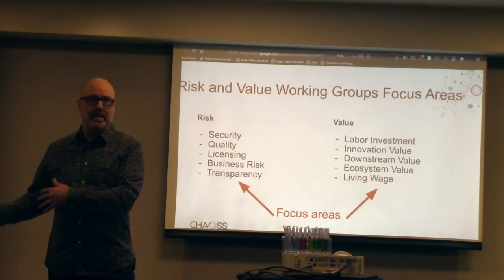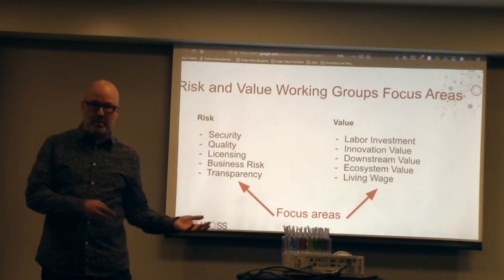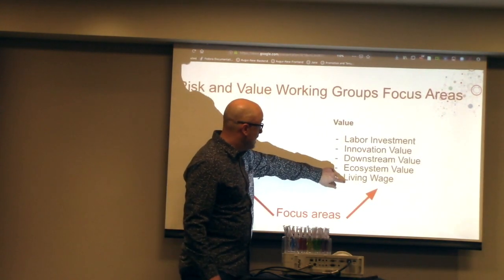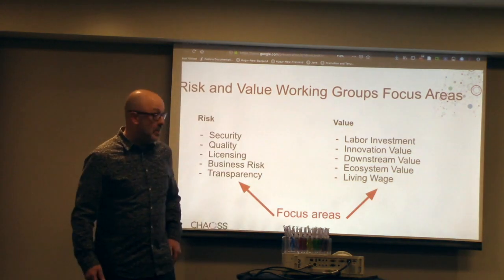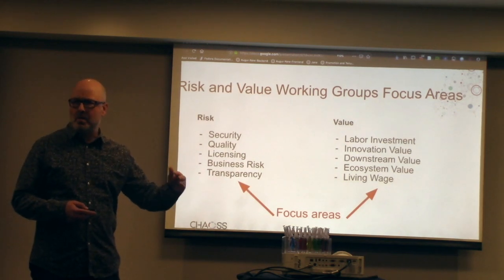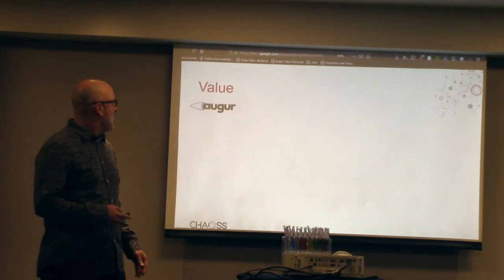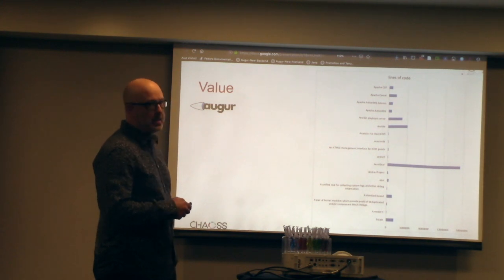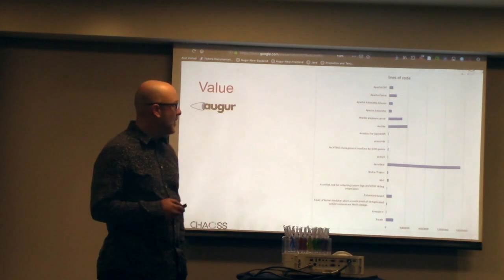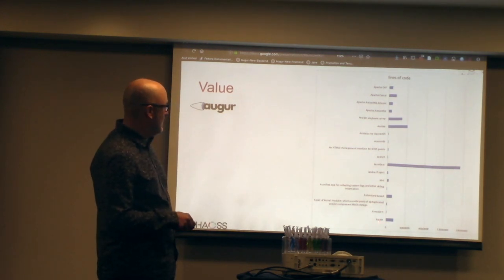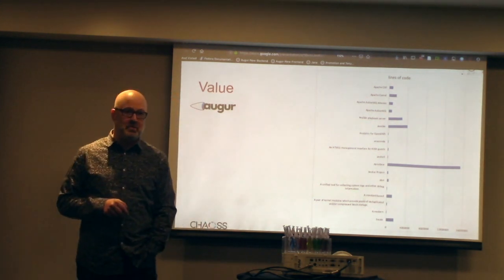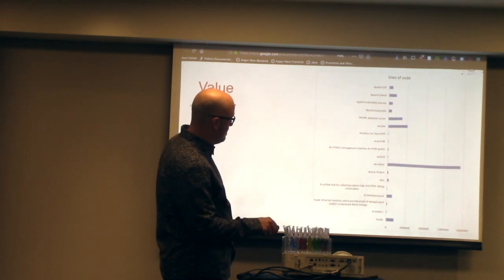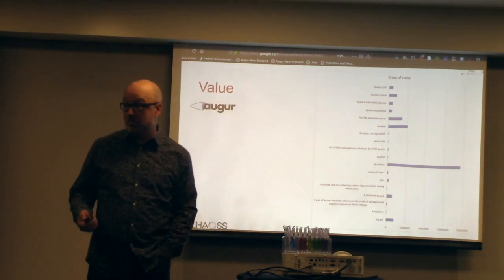Looking at which libraries are being consumed or depended on downstream, and what your software depends on — so looking at that lifecycle chain. Living wage is also a focus area that we don't have much definition around yet. To give an idea of how value metrics might work: looking at lines of code across any repository, I took the top of a list of 6,800 repositories. Arrow Gear in this list has by far the most lines of code, closing in at nearly 160,000.